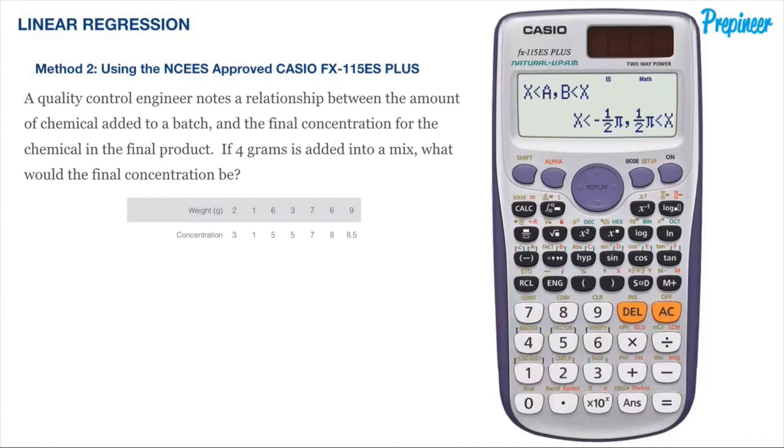This problem says a quality control engineer notes a relationship between the amount of chemical added to a batch and the final concentration for the chemical in the final product. If four grams is added into a mix, what would the final concentration be?